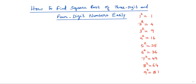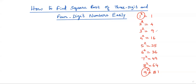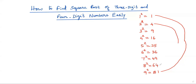Looking at these results, 1² and 9² both have digit 1 at the ones place. 2² and 8² both have 4 at the ones place. 3² and 7² have 9 at the ones place. 4² and 6² have 6 at the ones place. And 5² gives 25, which has 5 at the ones place.